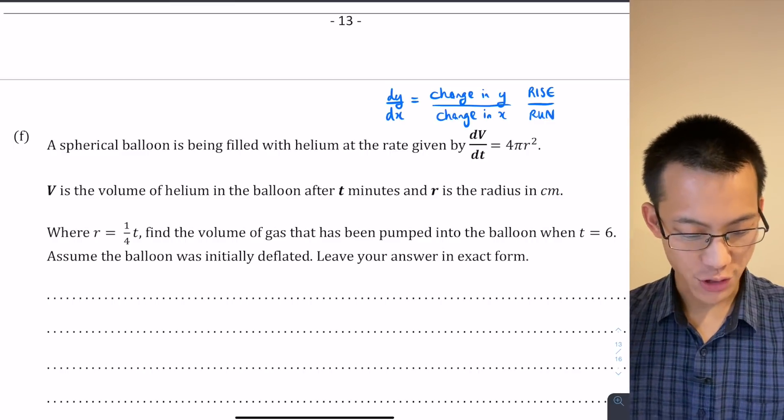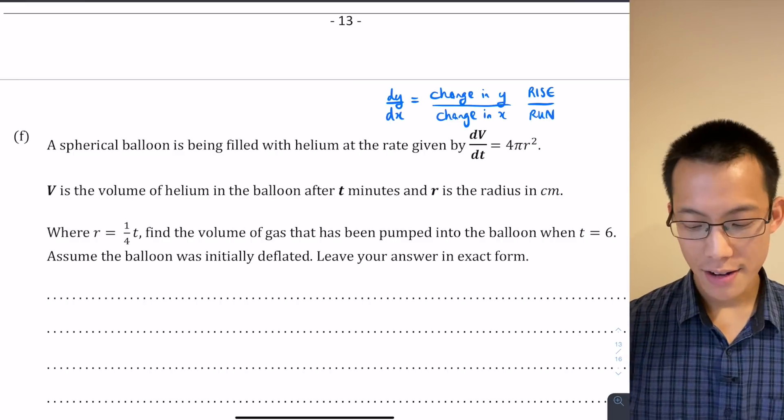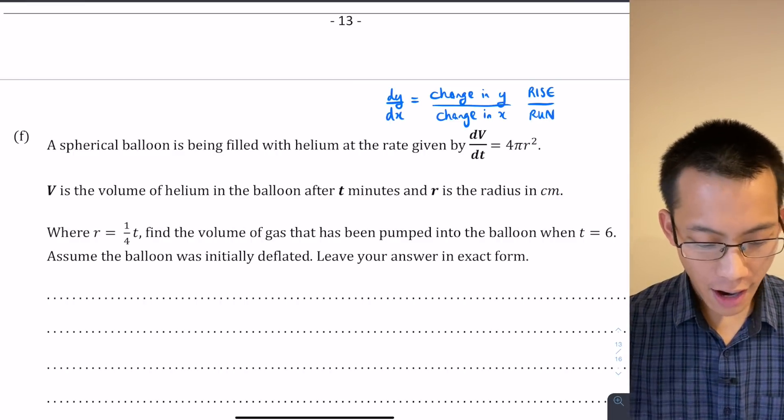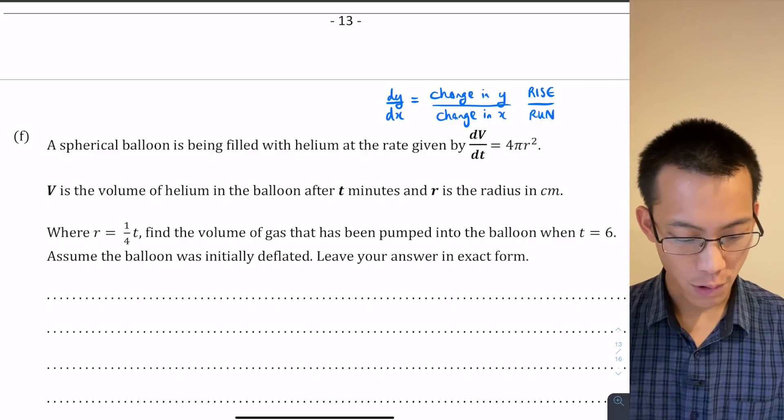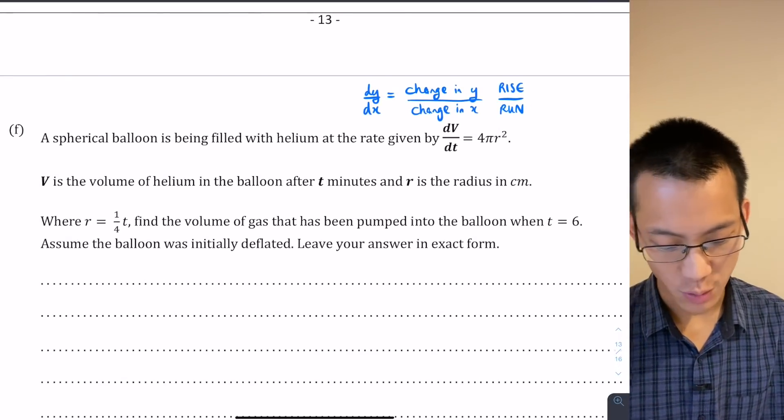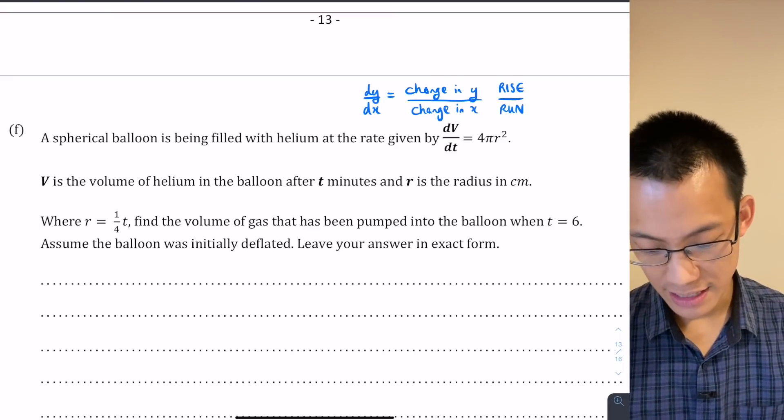The question continues. V is the volume of helium in the balloon after t minutes, and r is the radius in centimeters. Where r equals 1/4 t, find the volume of gas that's been pumped into the balloon when t equals 6. Assume the balloon was initially deflated. Leave your answer in exact form.